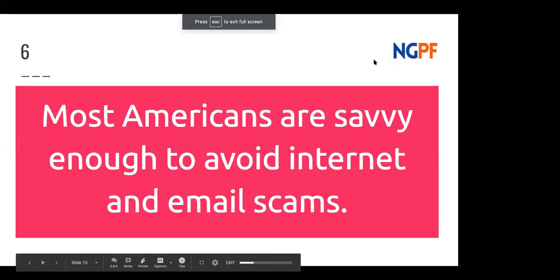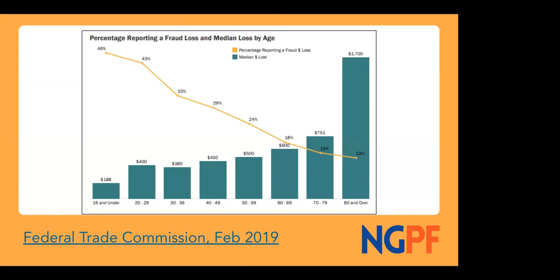The first topic is scams and fraud. This graph shows an interesting inverse proportionality. Along the bottom are age ranges. The highest percentage group that has reported fraud is people 19 and under — so more students you're likely teaching have experienced fraud than older age groups. However, the amount of money that young age group reports losing is relatively low compared to the very high bar at the end for people 80 and older.